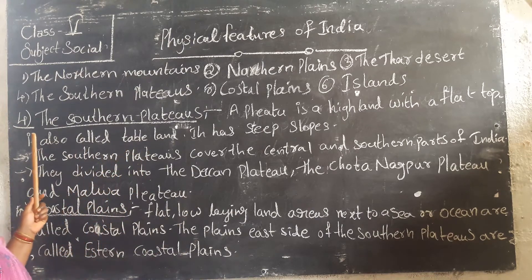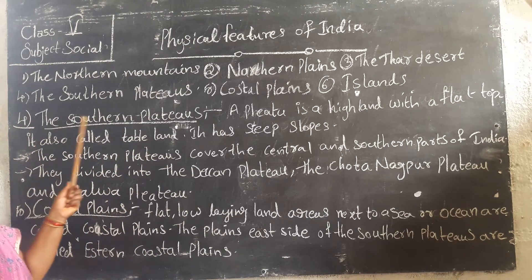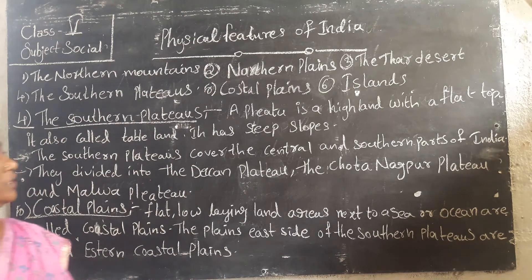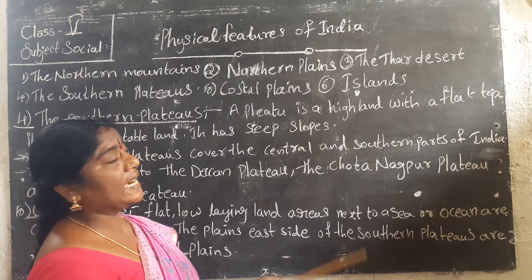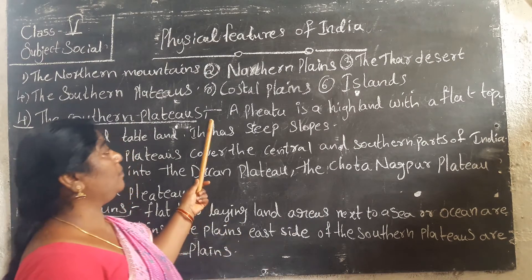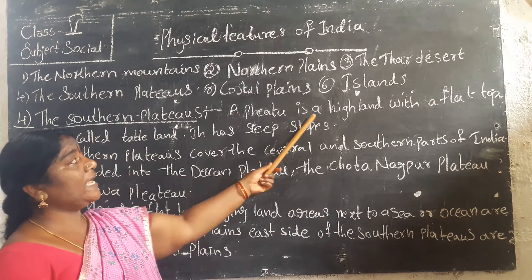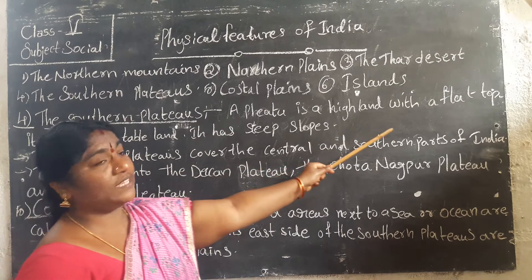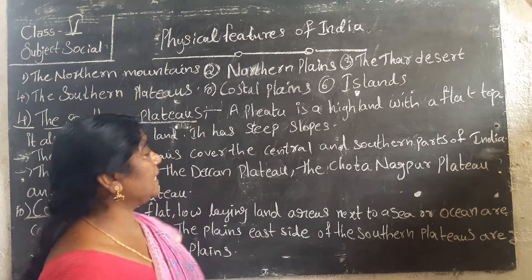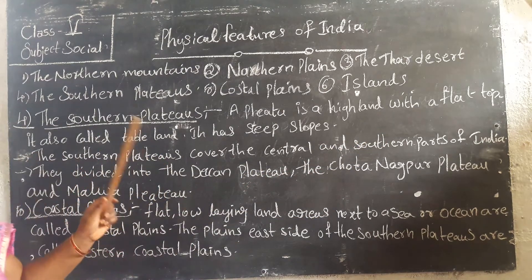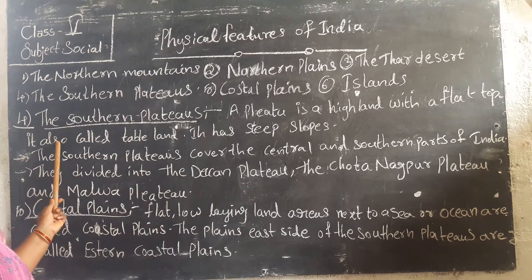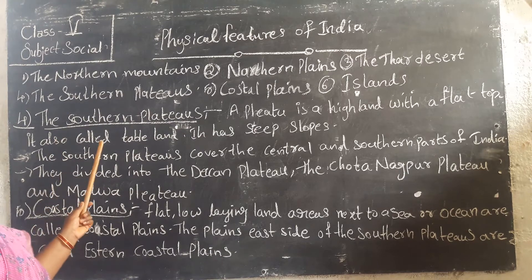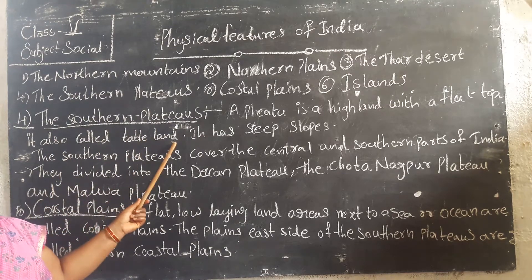A plateau is a high land with a flat top. A plateau is a high land with a flat top. The plateau is also called table land.